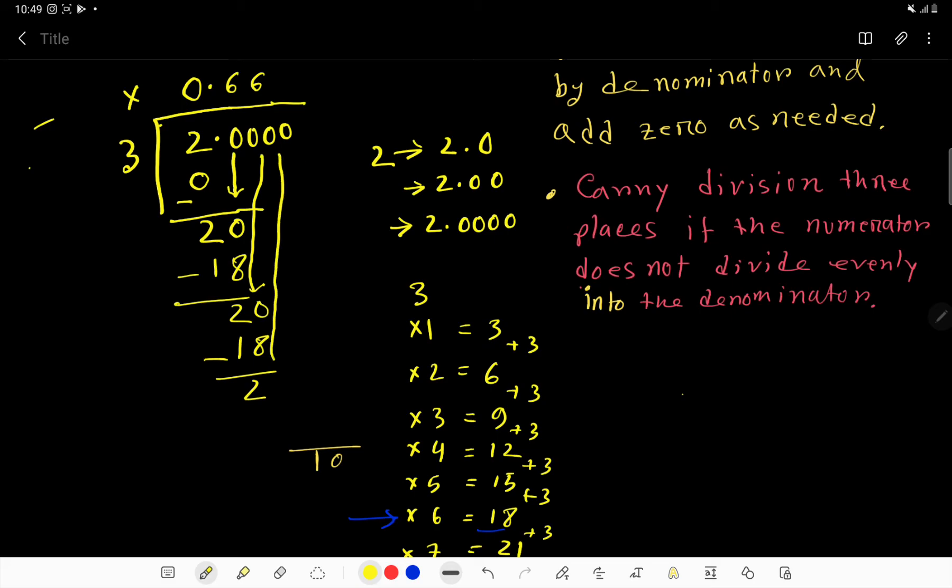Now, bring down the third 0. So we are getting 20. So now, take 6, 18. So 20, 20, 2.